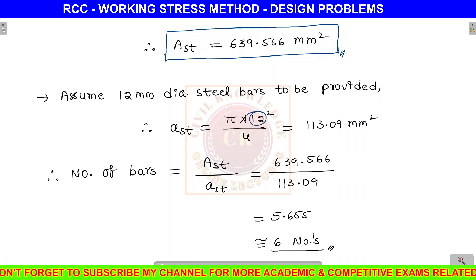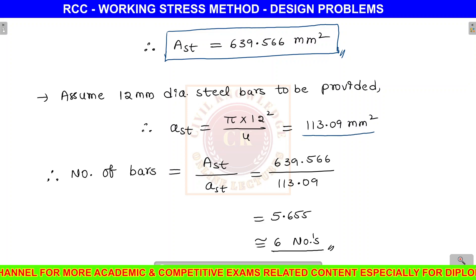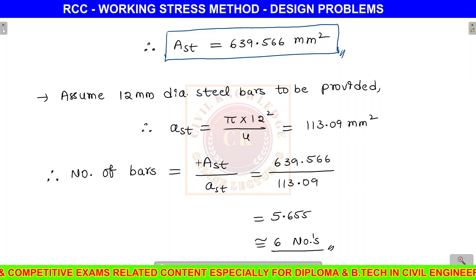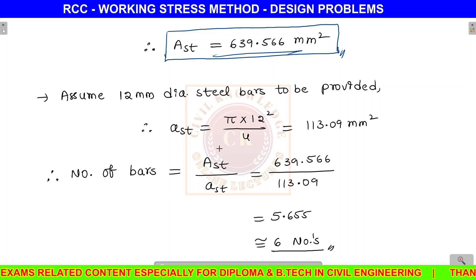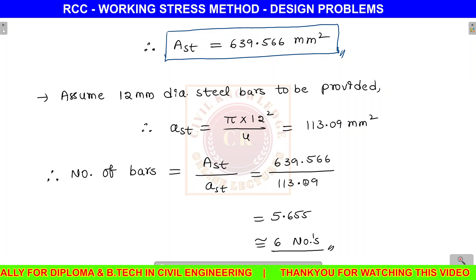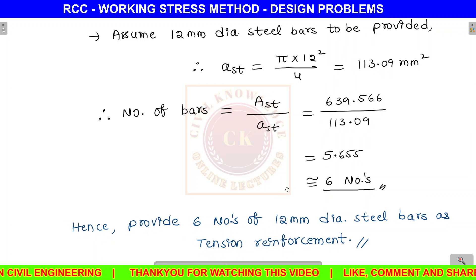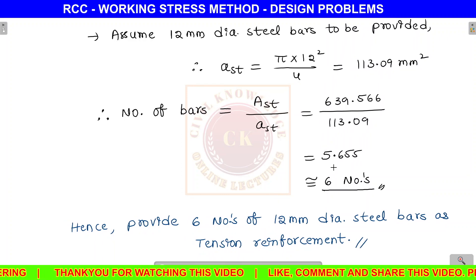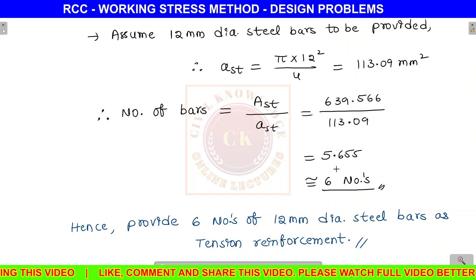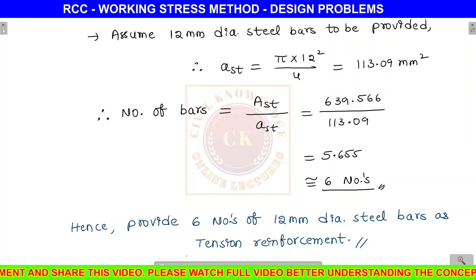Selecting 12 mm diameter bars: area of one bar = π/4 × 12² = 113.09 mm². Number of bars = total AST / area of one bar = 639.566 / 113.09 = 5.655, approximately 6 bars. Therefore, provide 6 numbers of 12 mm diameter steel bars as tension reinforcement.